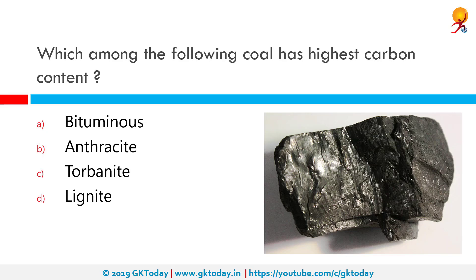Which among the following types of coal has the highest carbon content? That would be anthracite. It is a hard coal with a submetallic luster. It has the highest energy density of all types of coal and the lowest amount of impurities, which is why it is ranked highest in terms of purity.